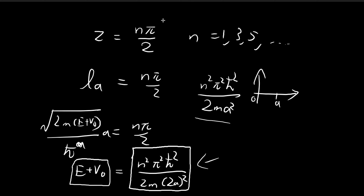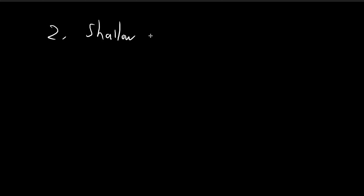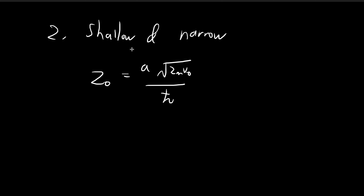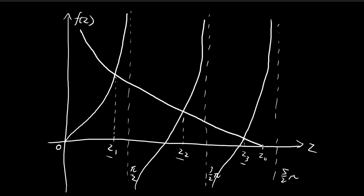Another limit to consider is a shallow and narrow well. Looking at Z₀ again — if the well is shallow then V₀ is small, and if it is narrow then A is also small, making Z₀ small. That means the intersection happens much earlier, giving a much shorter graph that only intersects the tangent Z curve at one particular spot. But no matter how small Z₀ gets, it is always going to intersect your tangent Z graph at some point — so there is always at least one bound state.